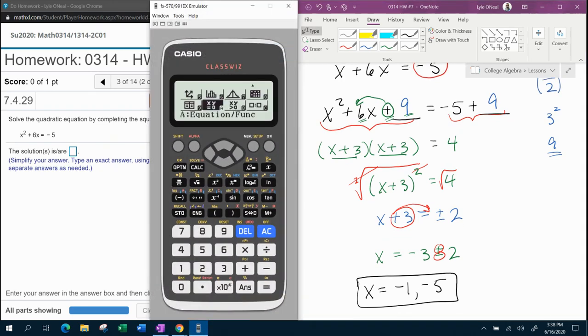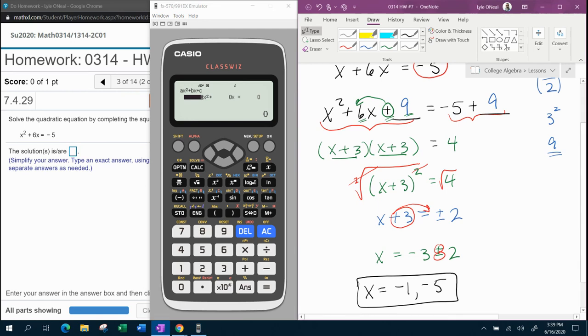Now, we do want to check that electronically. So using the Casio class whiz, we're going to go menu. Scroll down to option A, equation slash function. And then option 2 for polynomial. And then number 2 because it's quadratic.